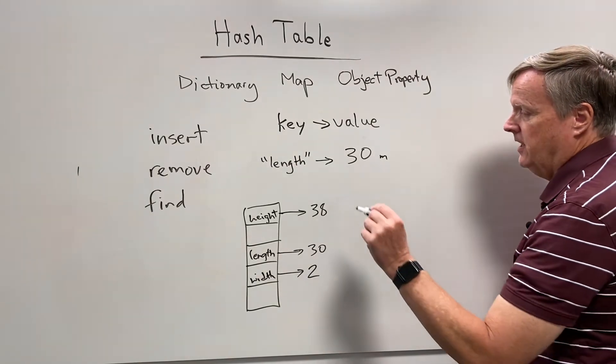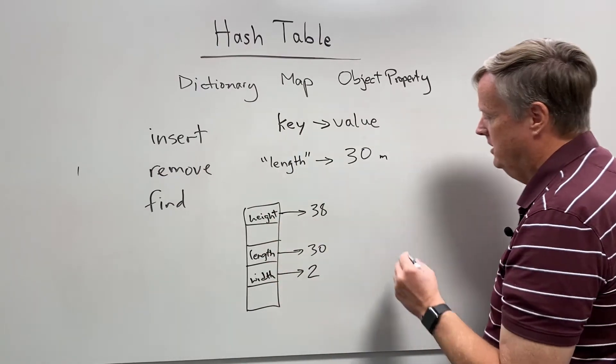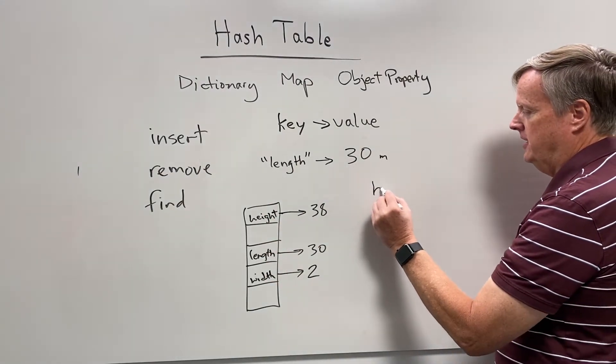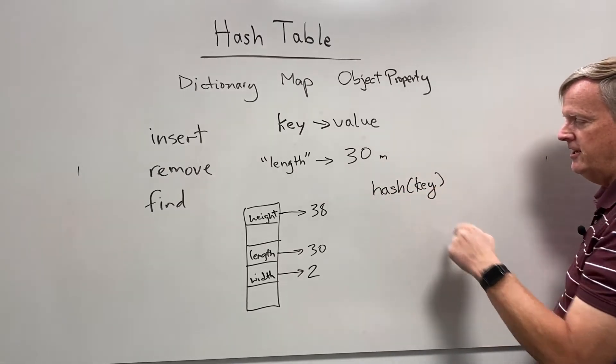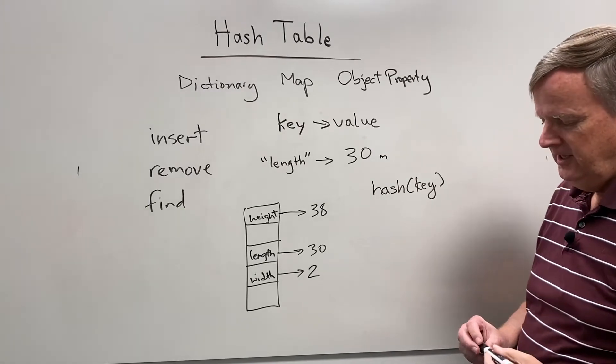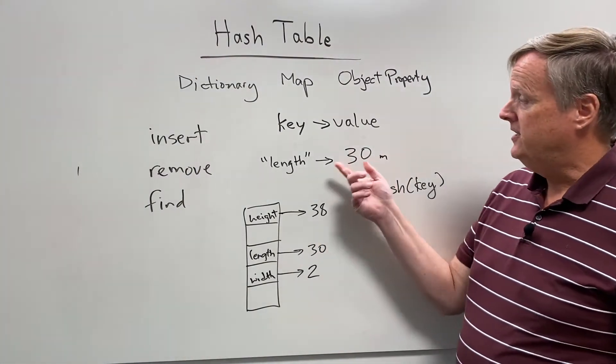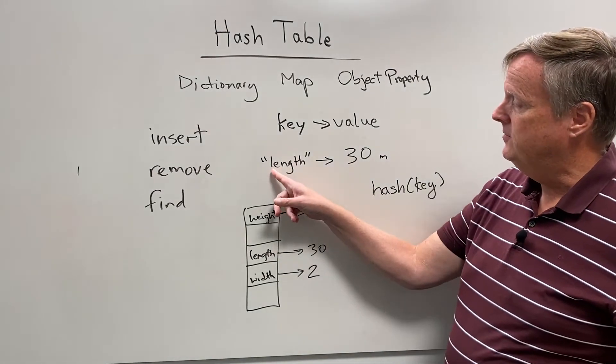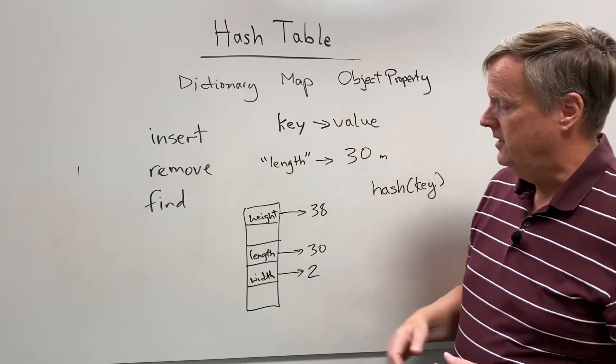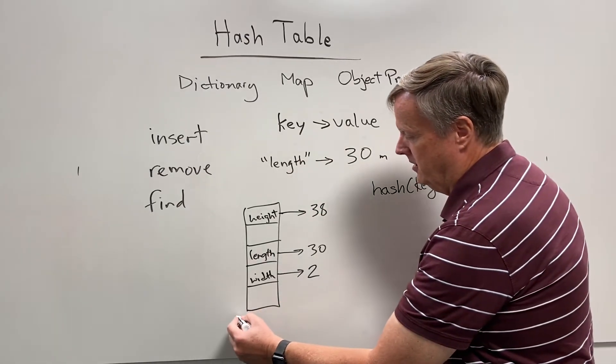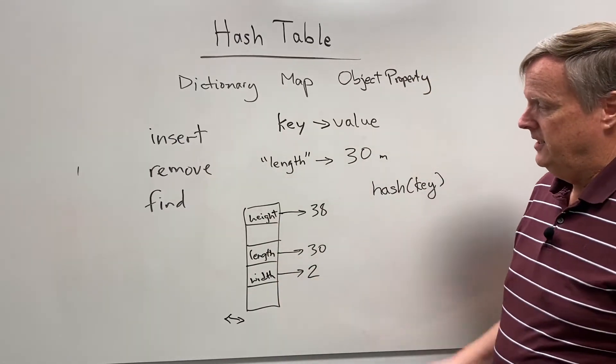The way that I figure out where the key is going to go is I hash the key. That's why it's called a hash table, because I hash the key. All hash means is it's a word that just means jumble up, and so I take the key and I jumble it. For example, I could take the ASCII value of each one of the letters in the key and sum them up, and then mod it with the length of the array that I have here, and I'll end up with an index.